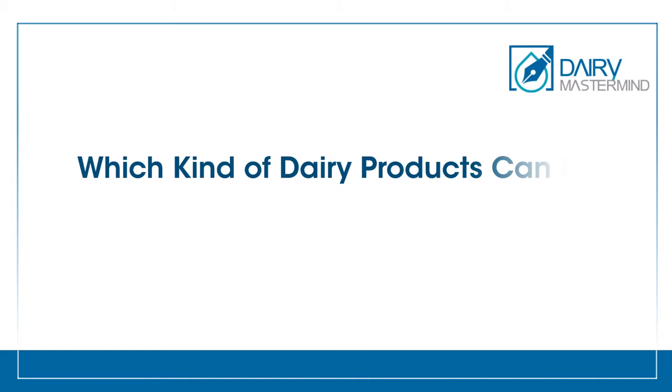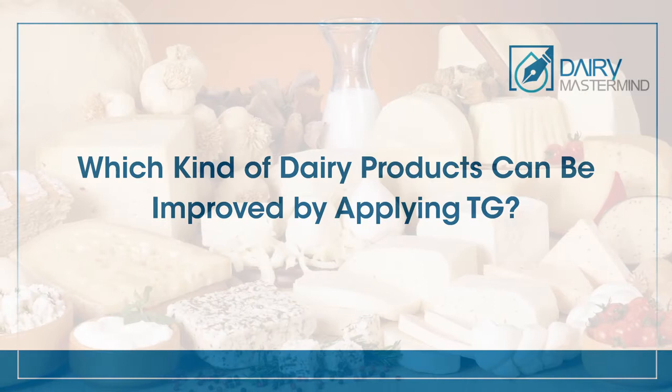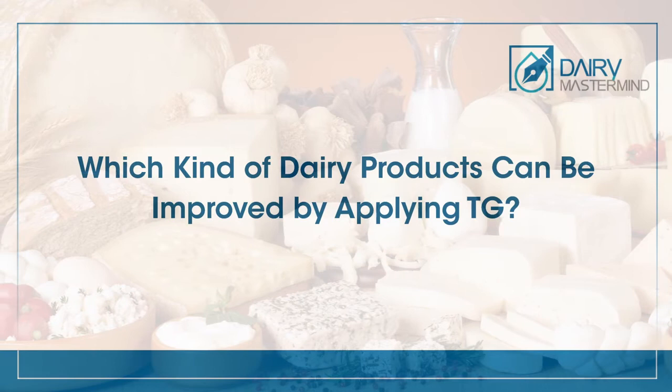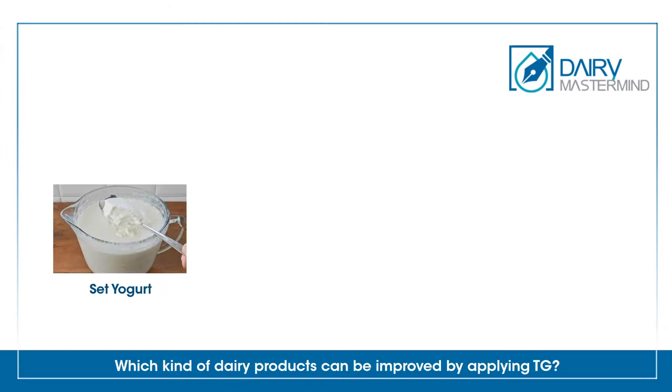Which dairy products can be improved by applying TG? All dairy products can be affected by TG to improve their quality, but the most common dairy products it could be applied to are all fermented products like set, stirred, and drinkable yogurt, and cheese.